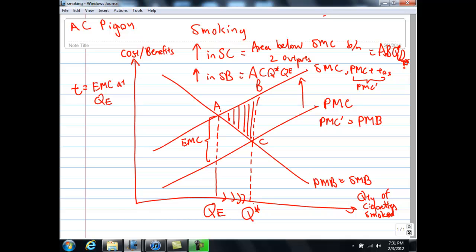So you can see that if you equate PMC prime to PMB, what you have done is that you have moved the output from QSTAT to QE. Where PMB is here, PMC prime is here, so the output is at QE. So you can see that by imposing this tax, we are now led by the invisible hand to consume the number of cigarettes where SMB equals SMC. So this will get rid of the deadweight loss ABC, and resources are efficiently allocated.